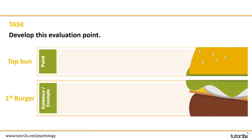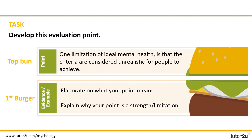So if we take these points further, we can start looking at how to use them to earn marks in your exam. For this task, let's revisit the burger and take the point on the screen. One limitation of ideal mental health is that the criteria are considered unrealistic for people to achieve. You need to complete this template — elaborate on what that point means and then offer an explanation for why this point is a limitation. Pause the video here for five minutes while you add your first burger to the writing frame.